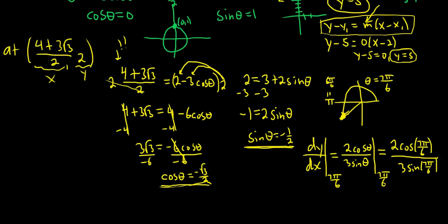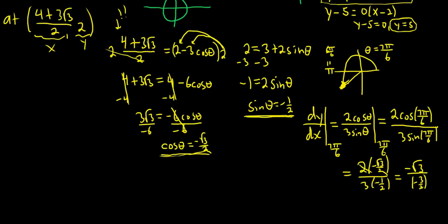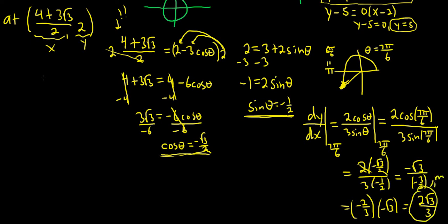We already know these values: cos(7π/6) = -√3/2 and sin(7π/6) = -1/2. So dy/dx = 2(-√3/2) / 3(-1/2) = (-√3) / (-3/2) = -√3 × (-2/3) = 2√3/3. That is our slope m.